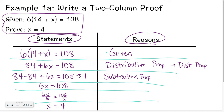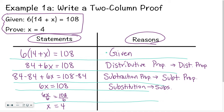Subtraction property is literally what it is called. If you want to abbreviate that, you have to include that T, because we're going to use something else that is similar — something called the substitution property. So if you're abbreviating subtraction, do S-U-B-T. Next, instead of writing 84 minus 84, I got rid of that and have a zero. Anytime you change the way something looks but don't change the value and you're not doing an operation, that's called substitution. You can just call it subs. That's why that T is important and that second S in subs is important.